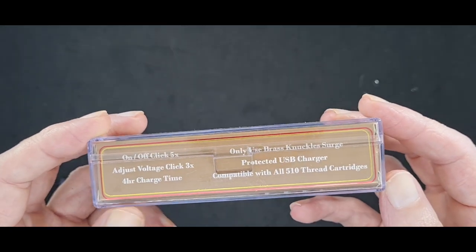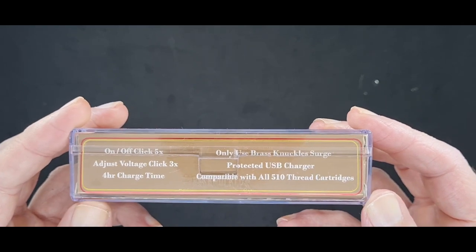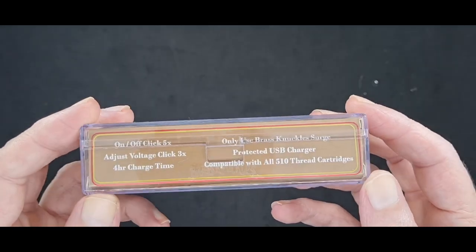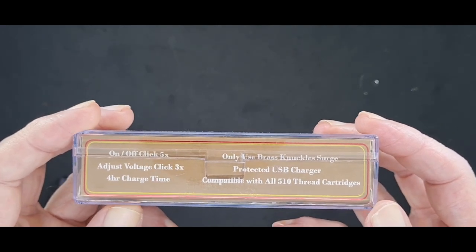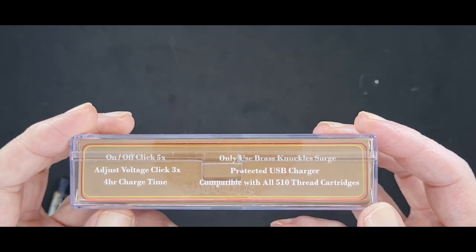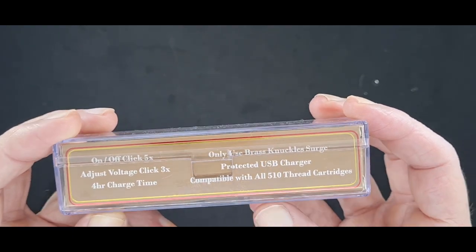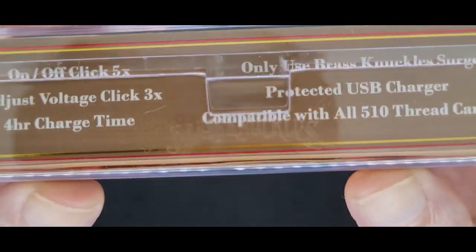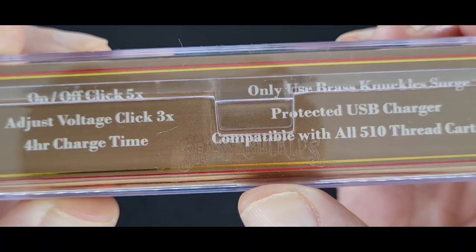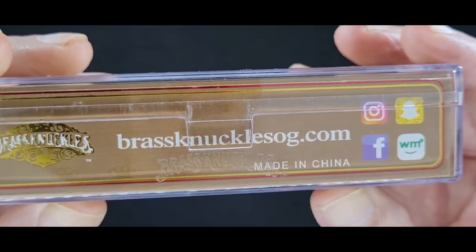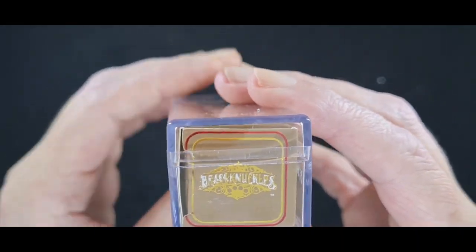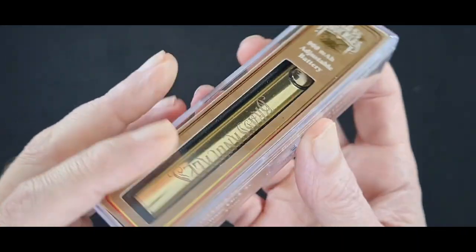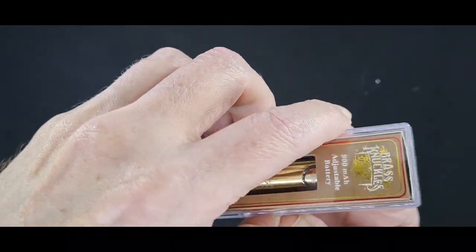Use only the charger that is provided which does have surge protection. It has a 510 connection, takes 510 carts. 510 is the size that all of us are familiar with in the vape world, it's the size of the end of the cart that screws into the pen. One thing on the box itself you can see there is brass knuckles on it, that's one way of telling that it's legit.